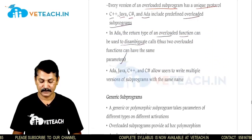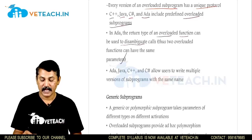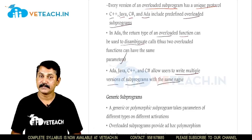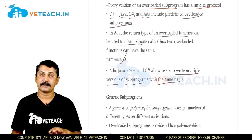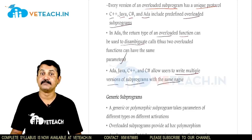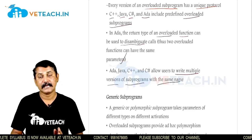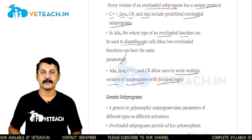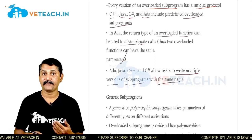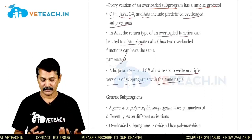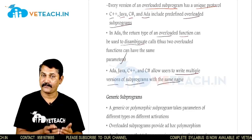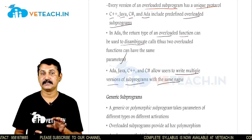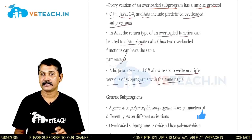In ADA, Java, C++ and C#, the language allows the user to write multiple versions of subprograms with the same name. The programmer can write functions in multiple ways where the subprograms are treated as functions in a program. So the programmer can write functions with the same name but with different actions.